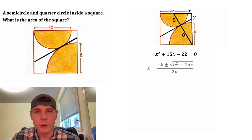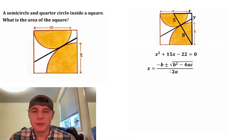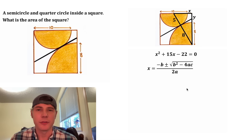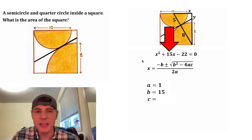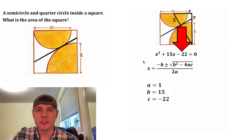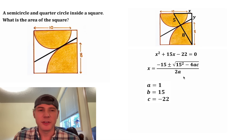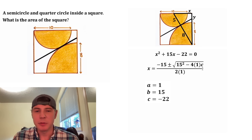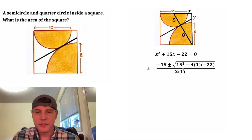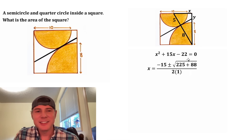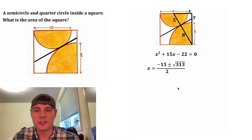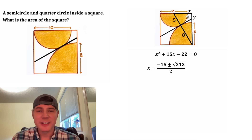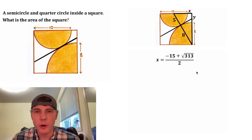Now let's use the quadratic formula. It says x is equal to negative b plus or minus the square root of b squared minus 4ac, whole thing over 2a. a is the 1 in front of the x squared, b is the 15 in front of the x, and c is the constant negative 22. Plugging in: 15 squared is equal to 225, and negative 4 times 1 times negative 22 is equal to positive 88. Inside the square root, 225 plus 88 is equal to 313, and in the denominator 2 times 1 is equal to 2. This gives us a positive value and a negative value, and since x is a positive length, we can get rid of the negative value.